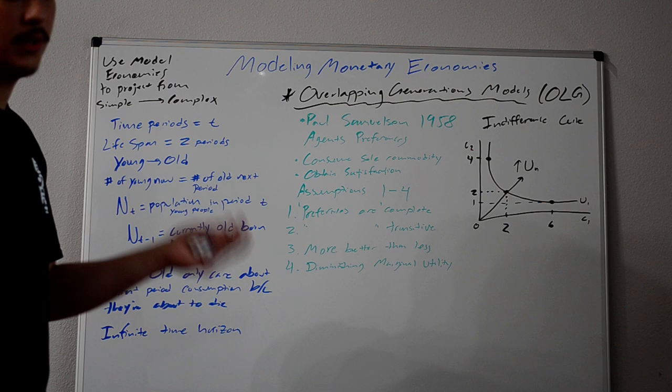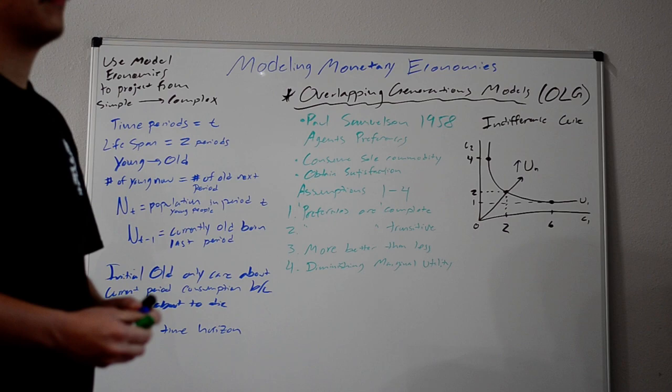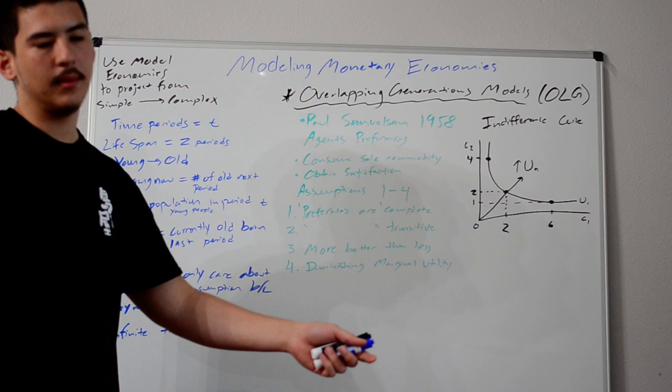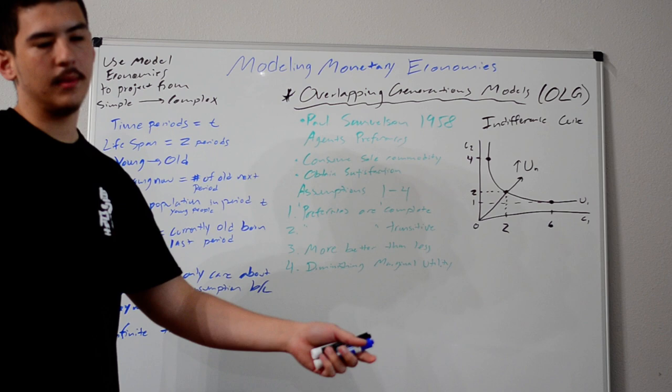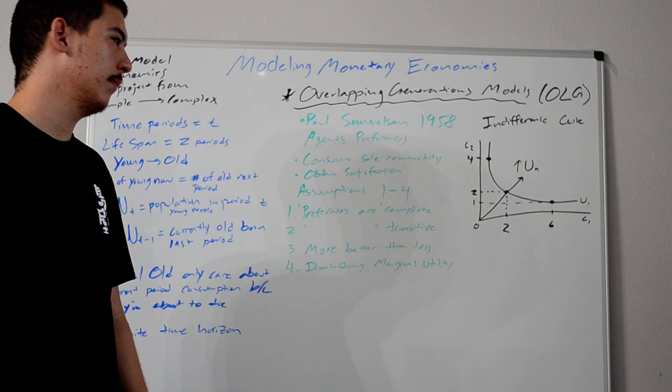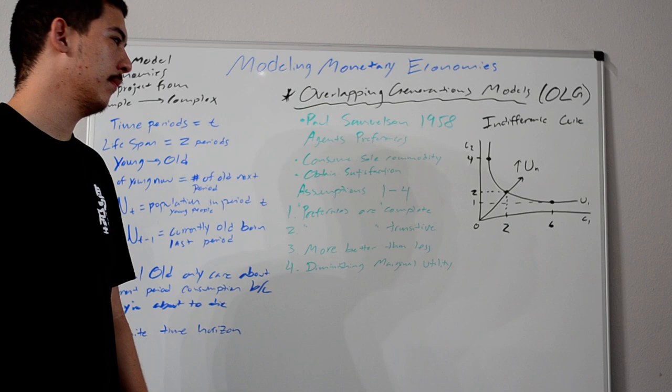I skipped over the section that covers the benevolent planner to find the optimal allocation. It's pretty simple to understand. If I need to make a video on it, I will. This is post that. The benevolent planner decides how to allocate goods between young and old people in the most optimal way. It's a very simple explanation, but it's not too complicated.